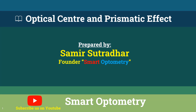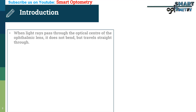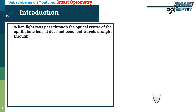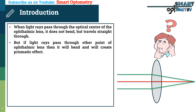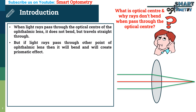Today I will discuss the optical center of ophthalmic lenses and prismatic effect. When light rays pass through the optical center of an ophthalmic lens, they do not bend but travel straight through. But if light rays pass through other points of the ophthalmic lens, they will bend and create a prismatic effect. The question is: what is the optical center, and why don't rays bend when passing through it?